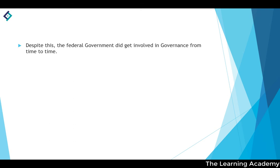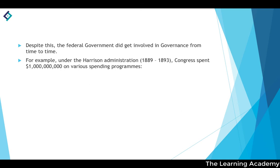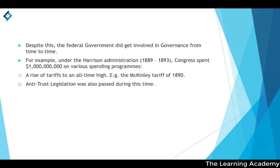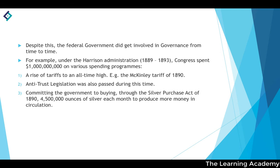Despite this, there were some examples of the federal government getting involved in domestic policy. Under the Harrison administration (1889–1893), Congress spent a billion dollars on various programs, including raising tariffs to an all-time high — culminating in the McKinley Tariff of 1890 — the passage of antitrust legislation, and the Silver Purchase Act of 1890, committing the government to buying 4.5 million ounces of silver each month to increase money in circulation.